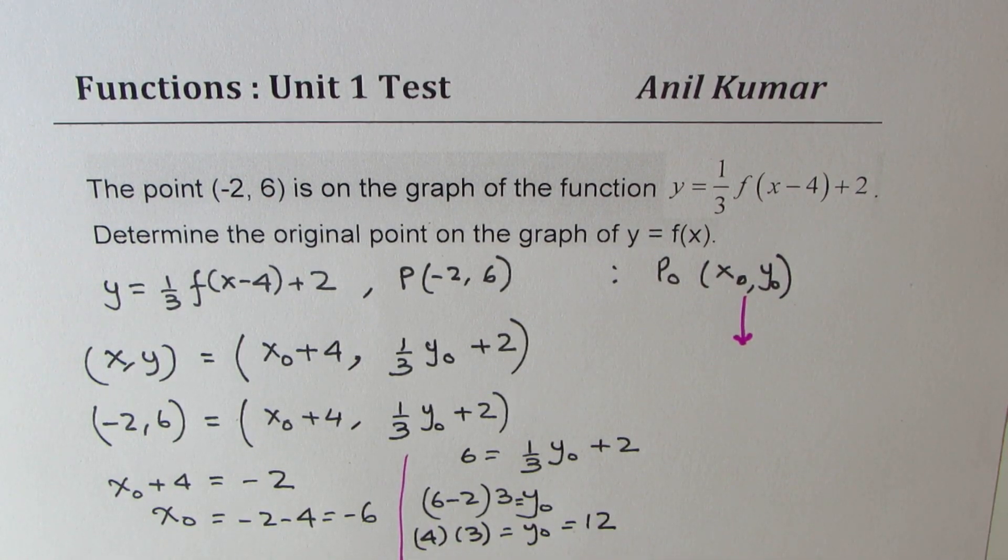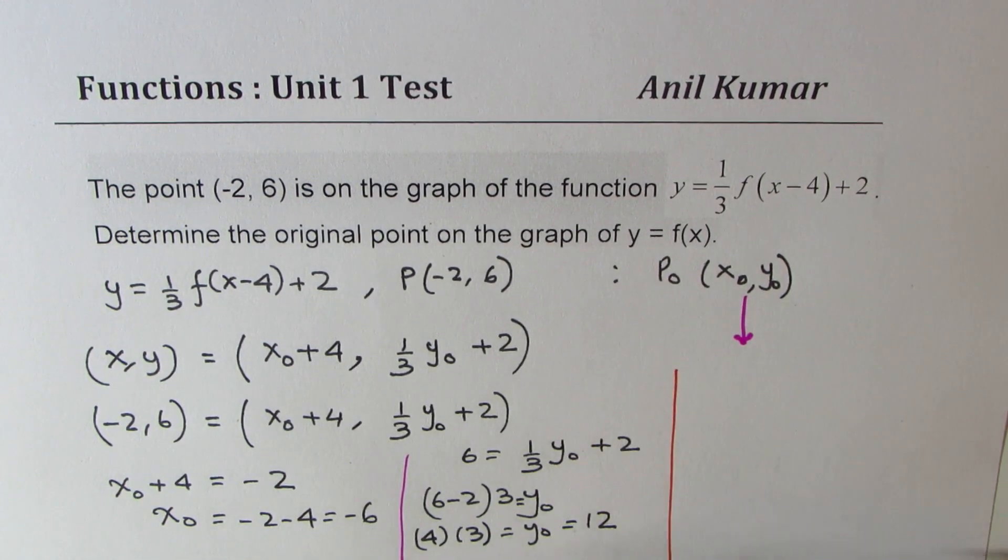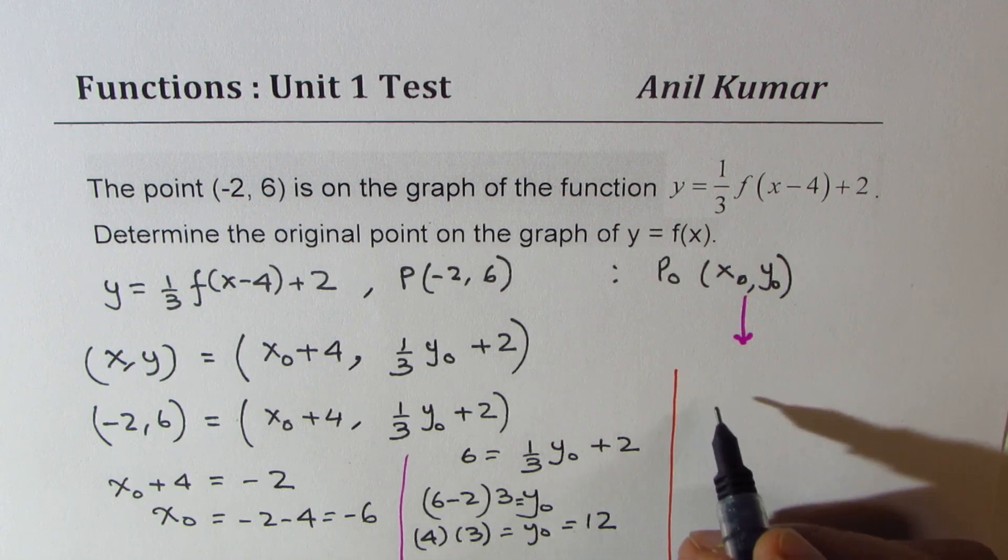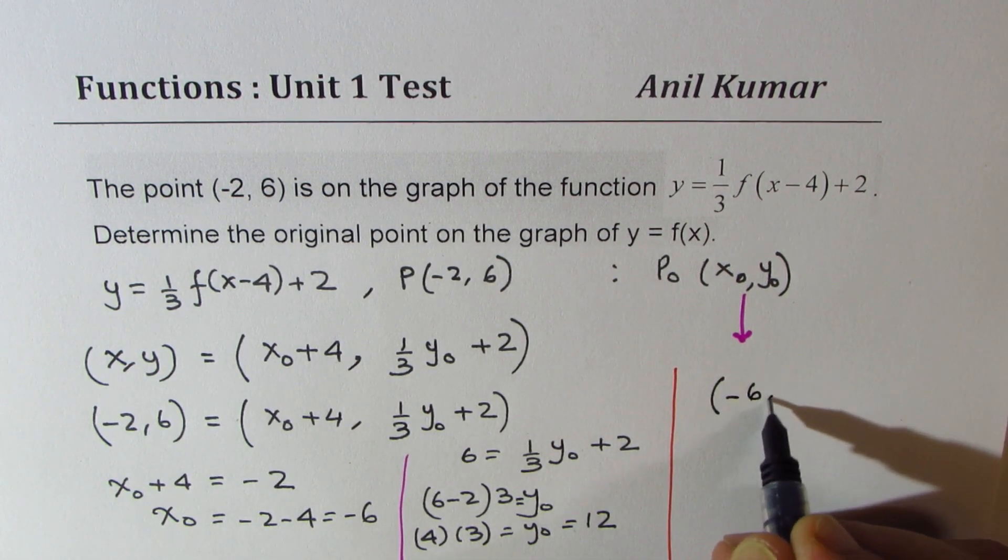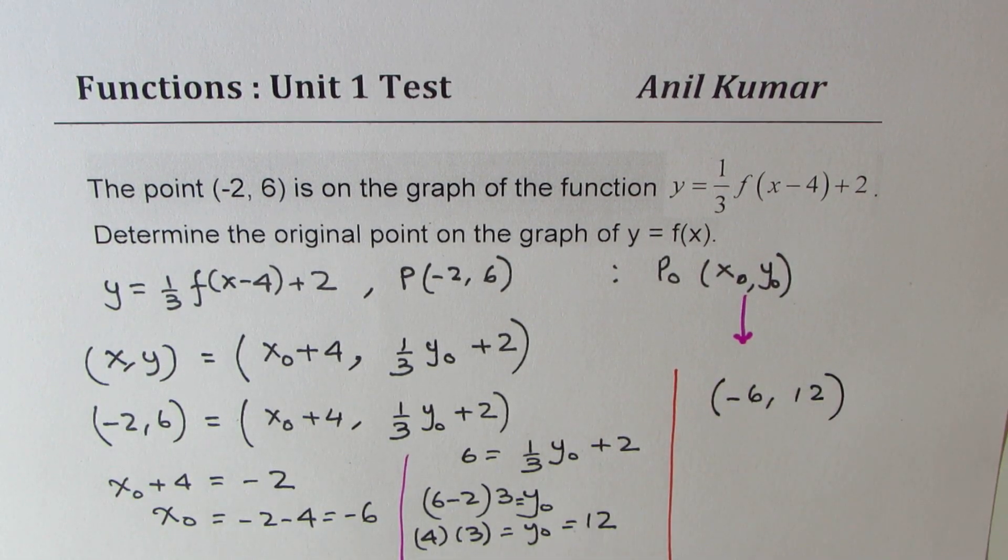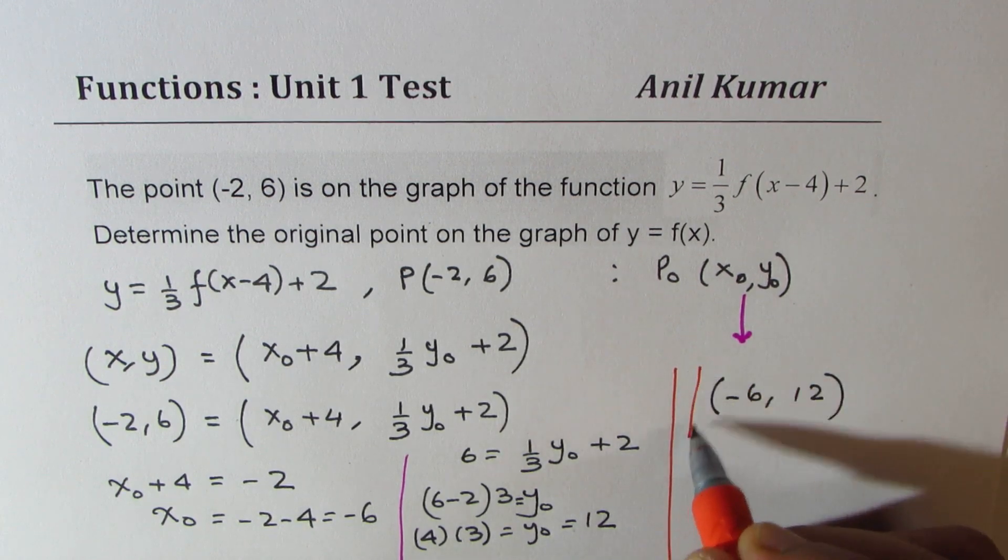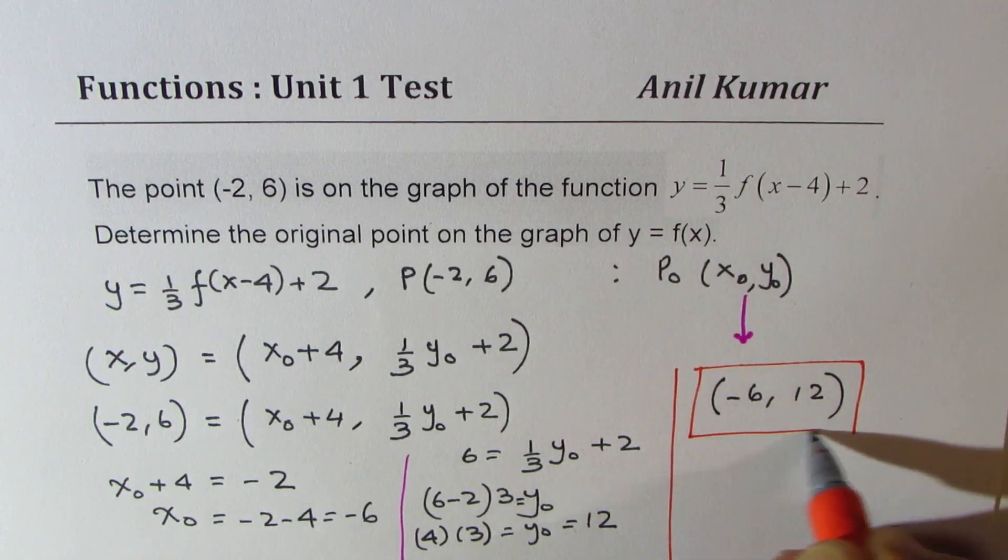So from here, we can easily write down the original point (x₀, y₀) should be (-6, 12). So that is the coordinate value for the original point.